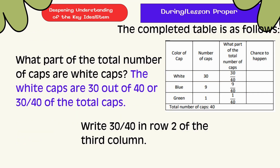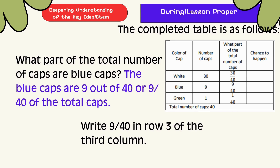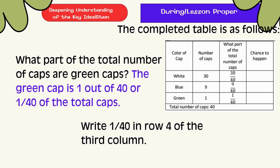The completed table is as follows. The white cups are 30 out of 40 of the total cups. Write 30 over 40 in row 2 of the third column. The blue cups are 9 out of 40 of the total cups. Write 9 over 40 in row 3 of the third column. The green cup is 1 out of 40 of the total cups. Write 1 over 40 in row 4 of the third column.